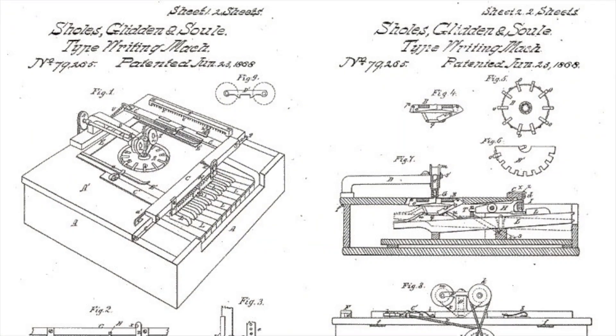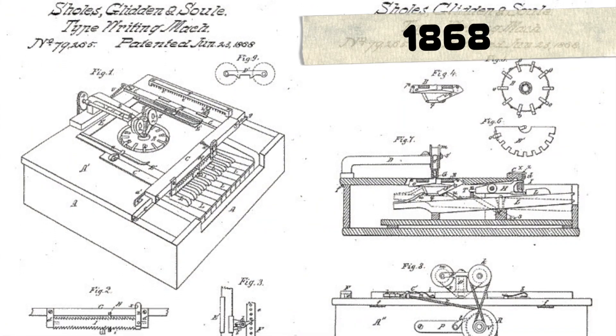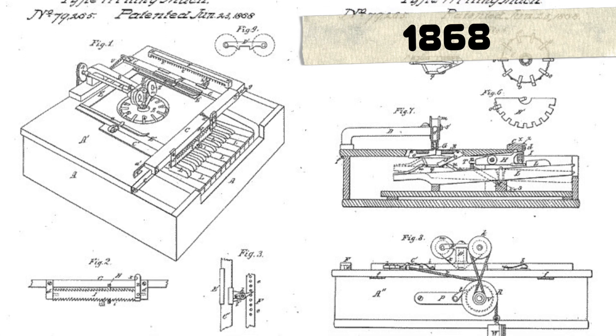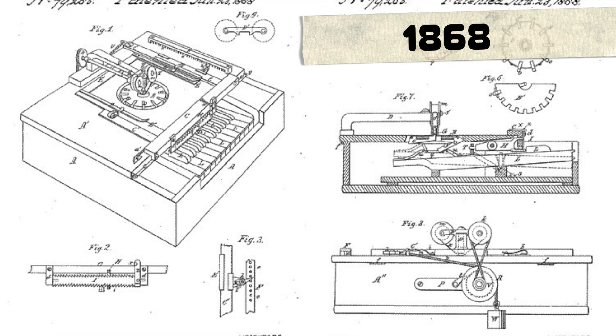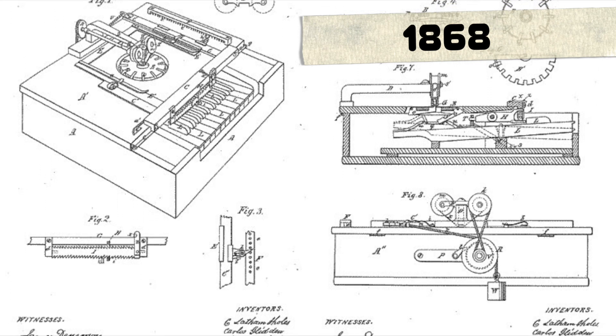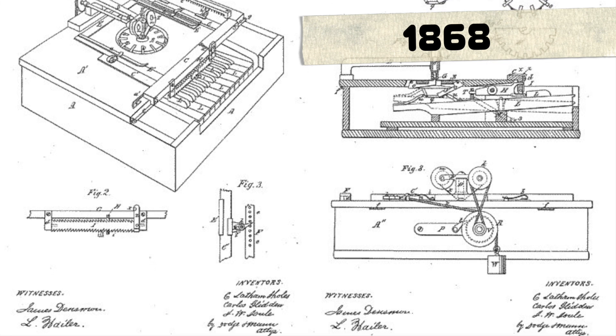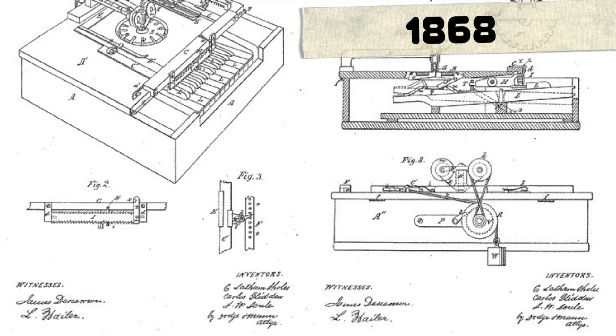Their prototype, completed in 1868, was a rudimentary device that typed on paper by pressing keys, each of which would strike an inked ribbon to print a character.